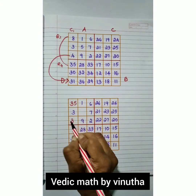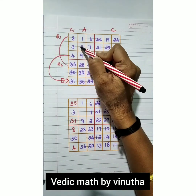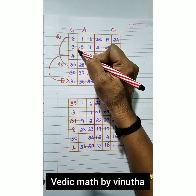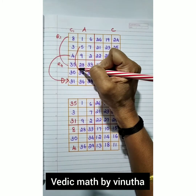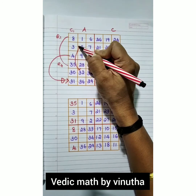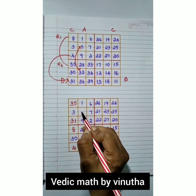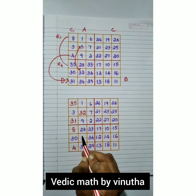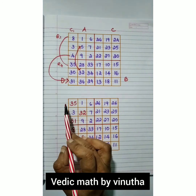Similarly, 4 will come here and 31 is written in its place. We also need to transpose one more box: 5 to 32, and 32 to 5. So here we write 32 and there we write 5.